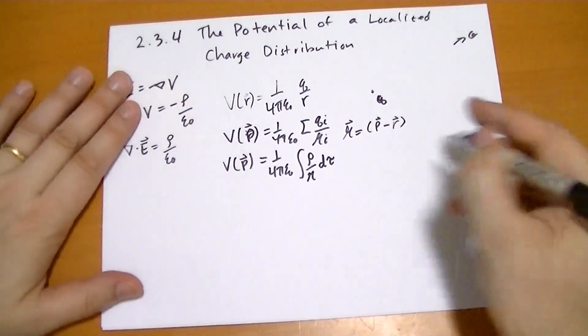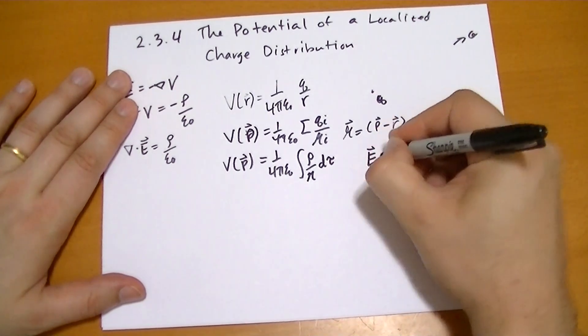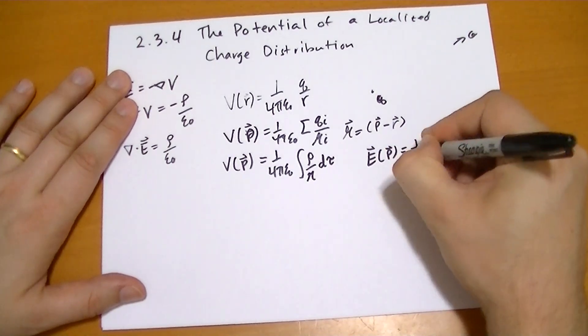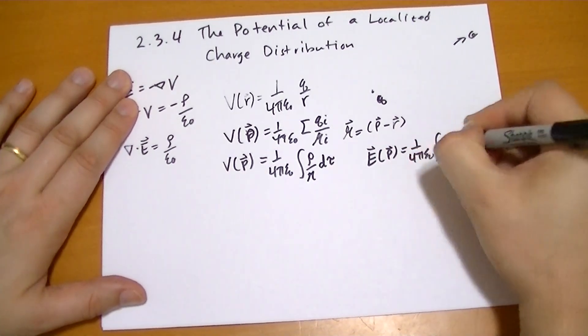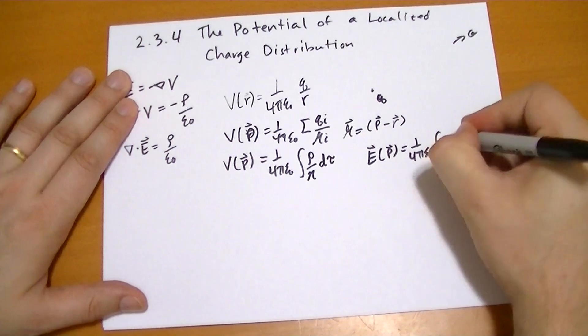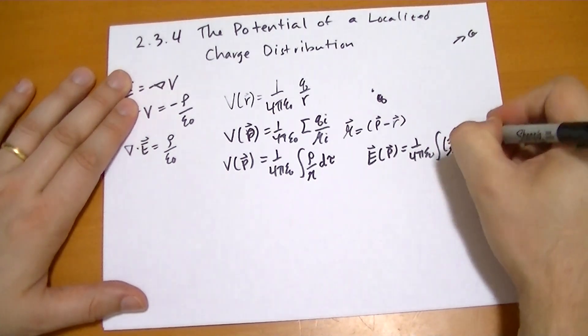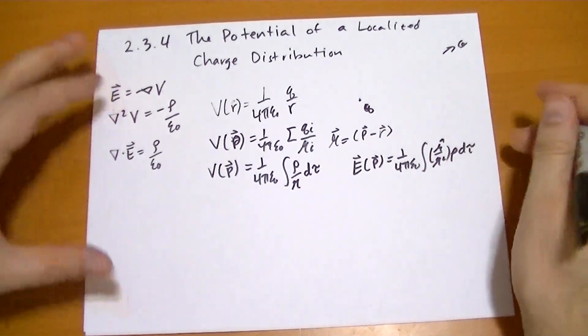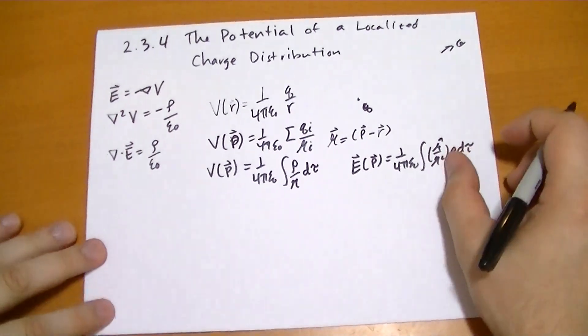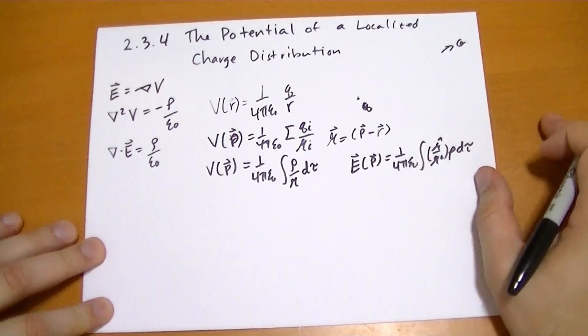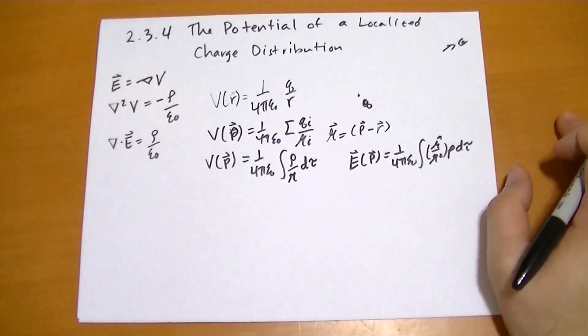And if you remember what the equation for calculating the electric field was, very similar, but there's this pesky R hat over R squared rho d tau in there that made the integrals difficult to solve. So we've gotten rid of that difficult part. Now we're dealing exclusively with scalars. Life gets a lot easier.